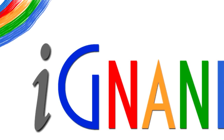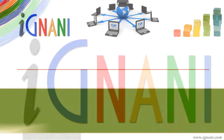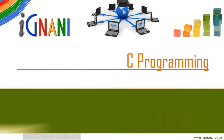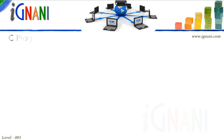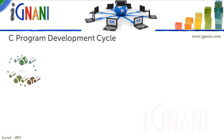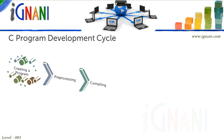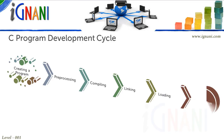Welcome to Ignani.com — C Programming, Chapter 4: Compiling and Execution. A typical C program development cycle goes through the following stages: creating a program, pre-processing, compiling, linking, loading, and execution.